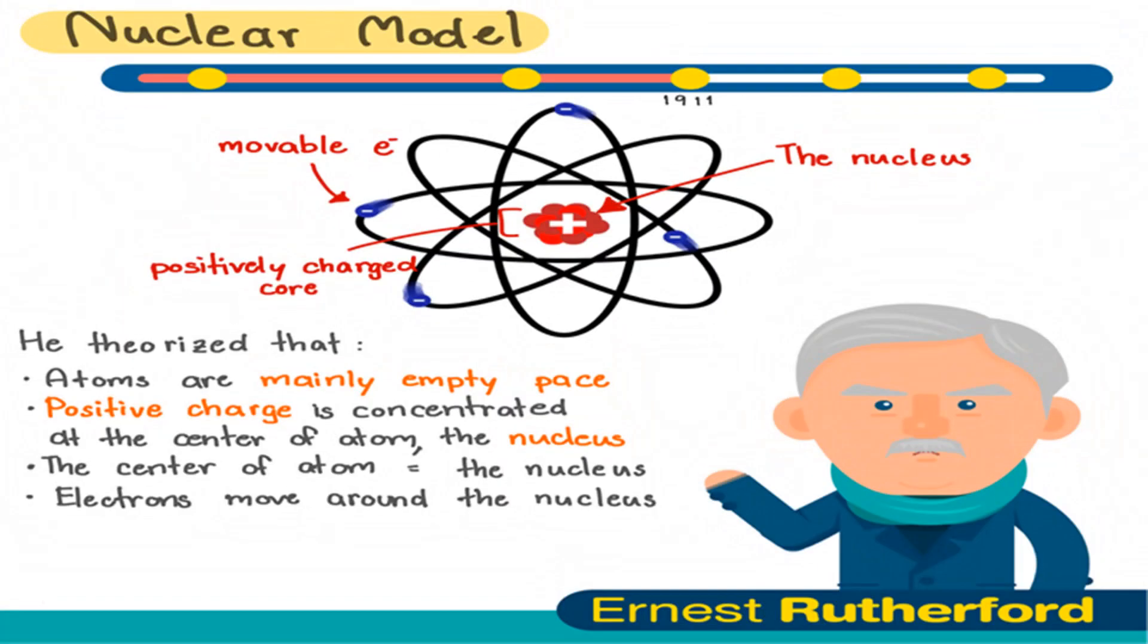Based on his discovery of the nucleus, Ernest Rutherford, 1871 to 1937, proposed the nuclear atom in which electrons surround a dense nucleus. He thought of the rest of the atom as empty space. Later experiments showed that the nuclei of atoms are composed of protons and neutrons.